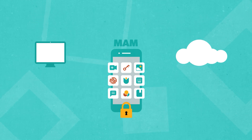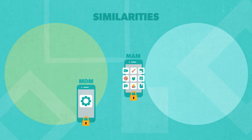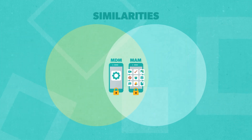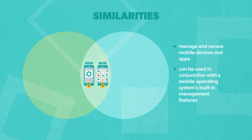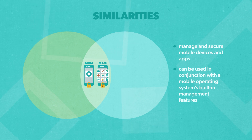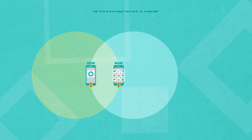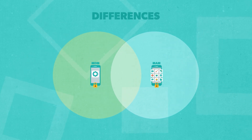So, what do MDM and MAM have in common? Both softwares are used to manage and secure mobile devices and apps, and both can be used in conjunction with a mobile operating system's built-in management features. But the similarities end there.